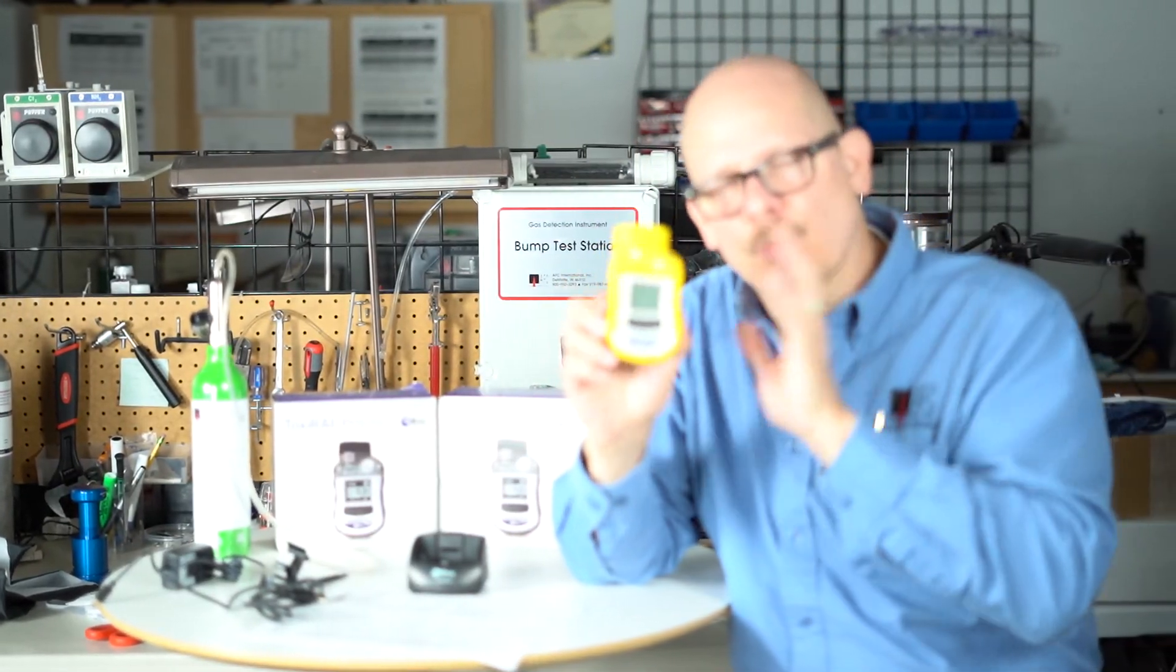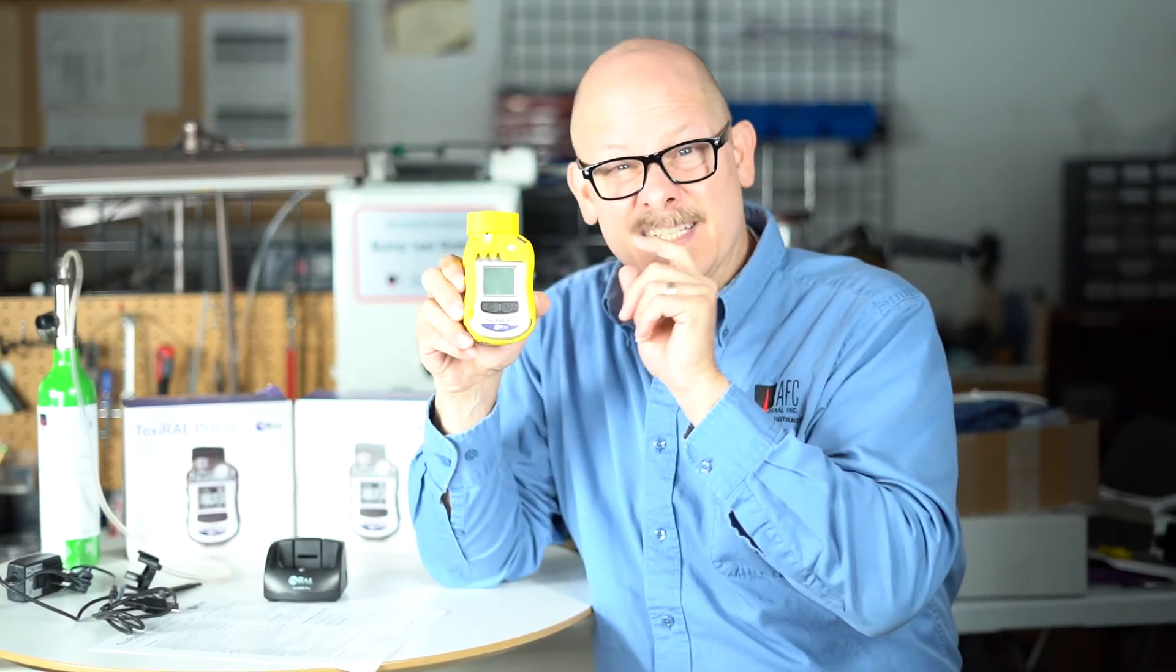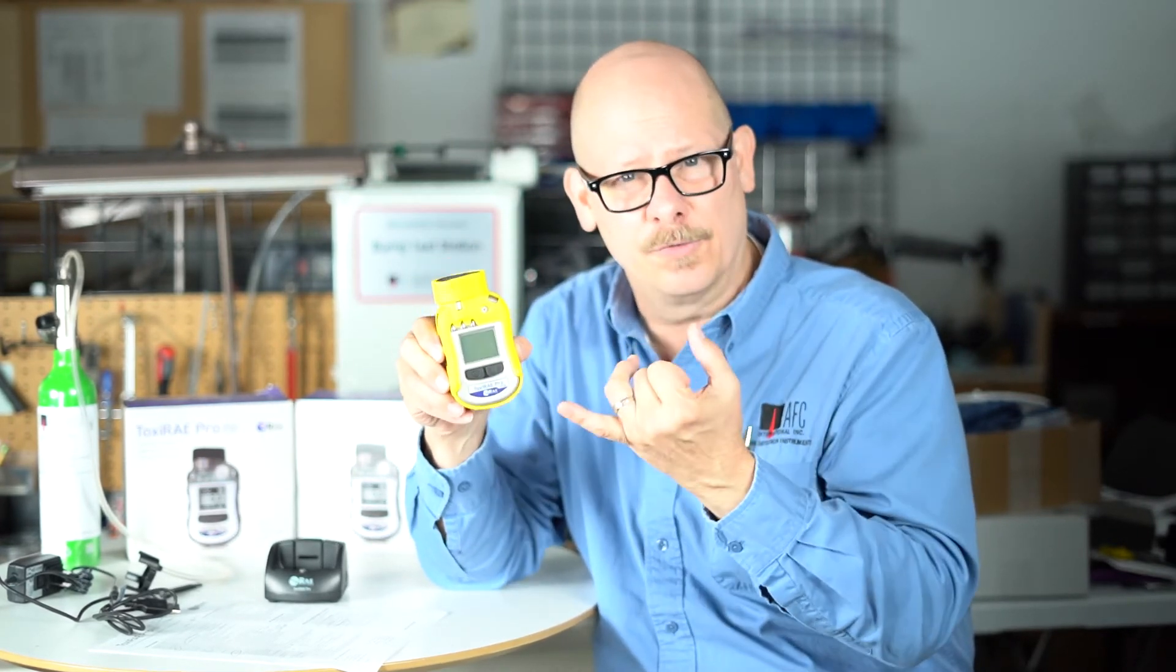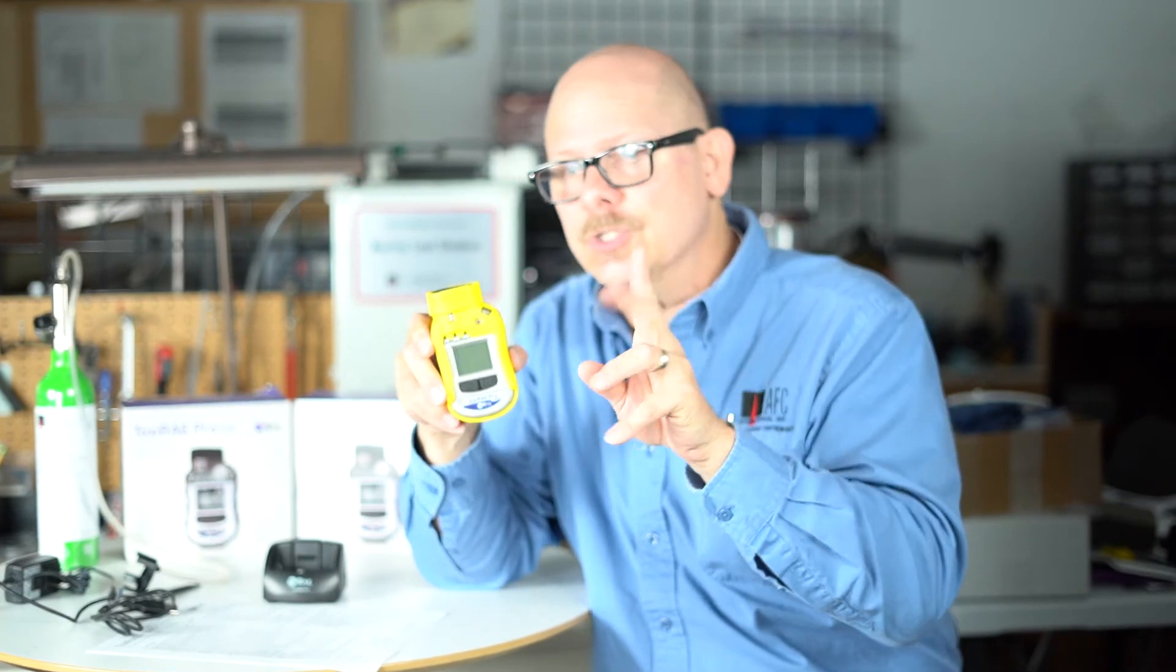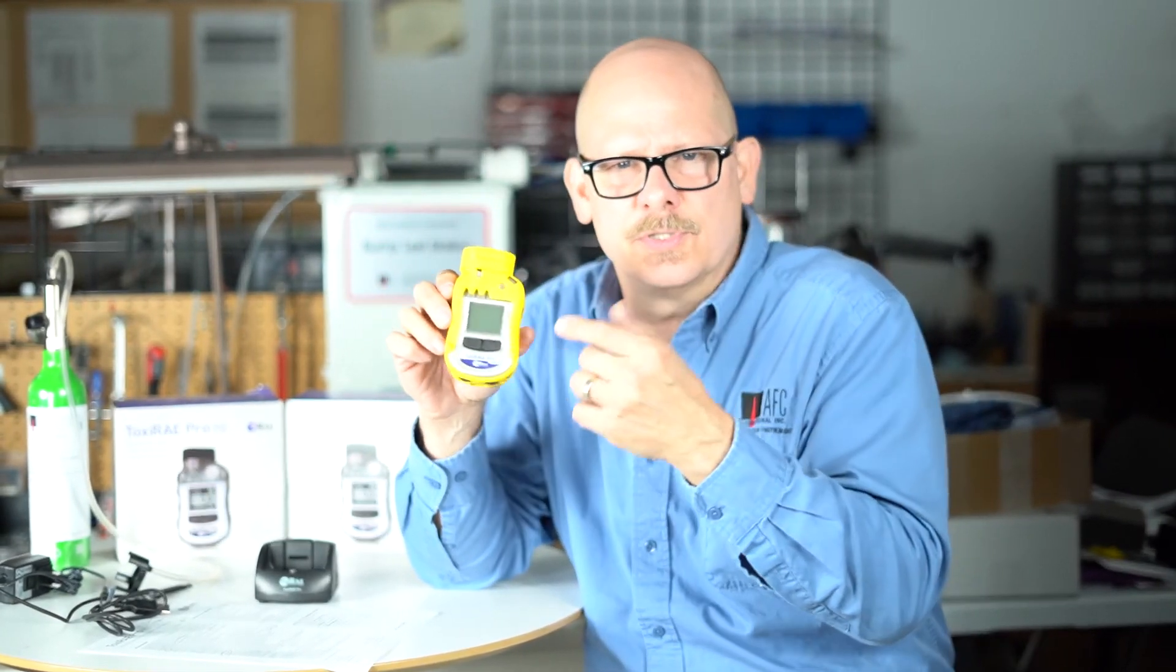Great little unit, Toxiray Pro PID. Comes in 10.6 and 9.8. Great for volatile organic compounds. Two versions, industrial hygiene version with full data logger, standard version with no data logger. There's a third option too, wireless. This one's a wireless unit. You really can't tell the difference between the two. You just got to look at the icon.